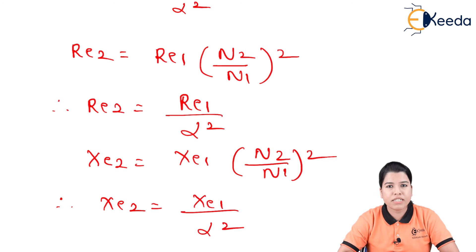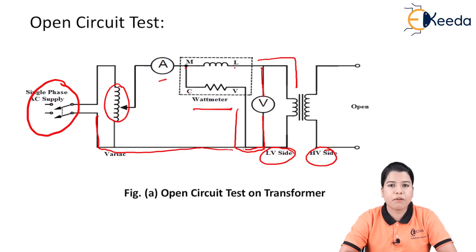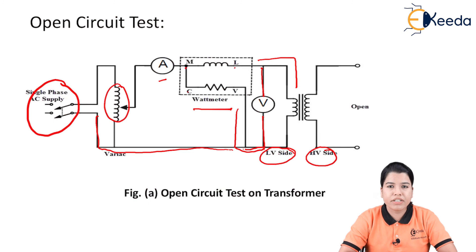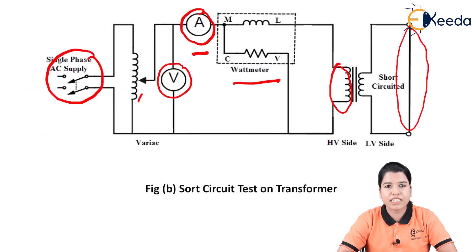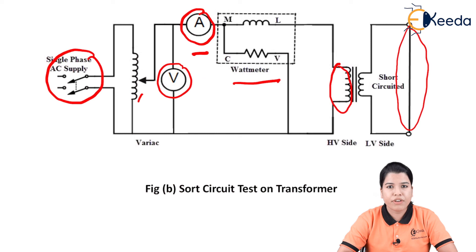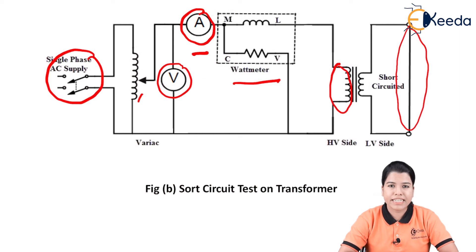In the open circuit test, the supply is given to the LV winding while the HV winding is kept open. This is because laboratory instruments can measure the low voltage of the LV winding, whereas instruments to measure the high voltage of the HV winding are not readily available. In the short circuit test, the supply is given to the HV winding while the LV winding is short circuited, because the HV winding carries less current than the LV winding, and only a very low voltage is needed to achieve rated current.